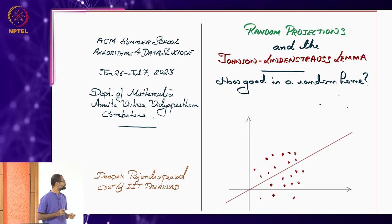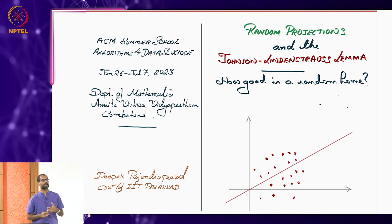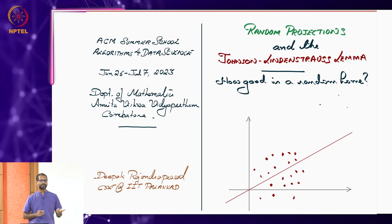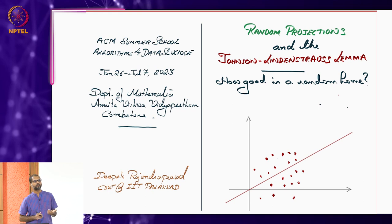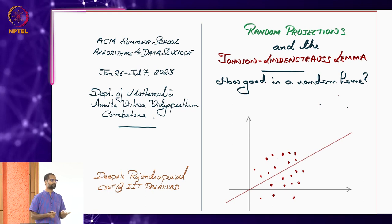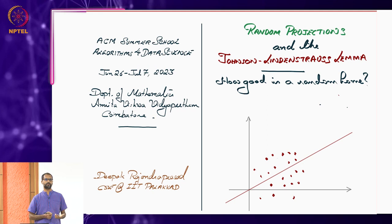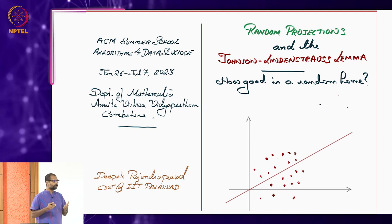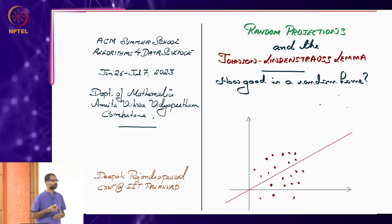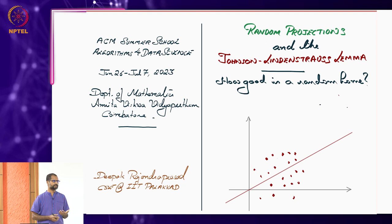That is why the subtitle for this talk is 'how good is a random hope.' Yesterday the subtitle was 'which is the best-fit low-cost home.' The low-cost goal still remains the same - we are always looking for dimensionality reduction.